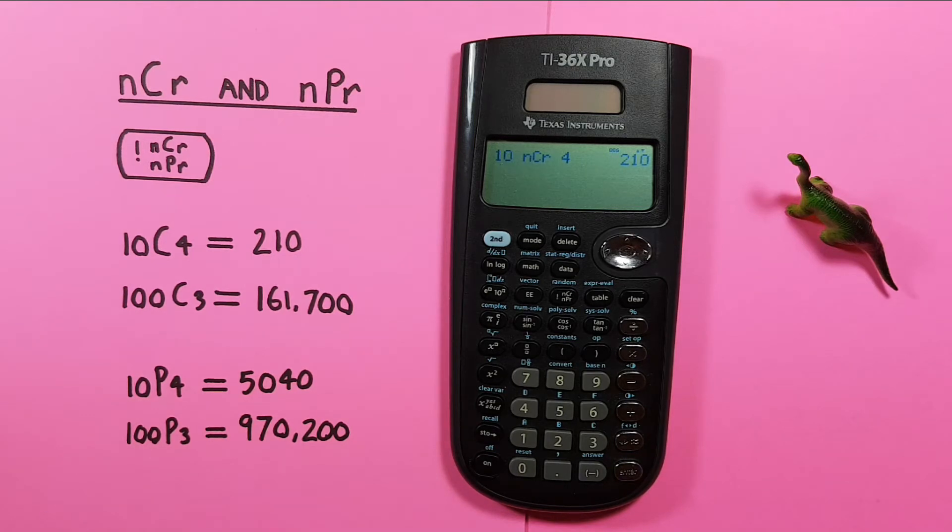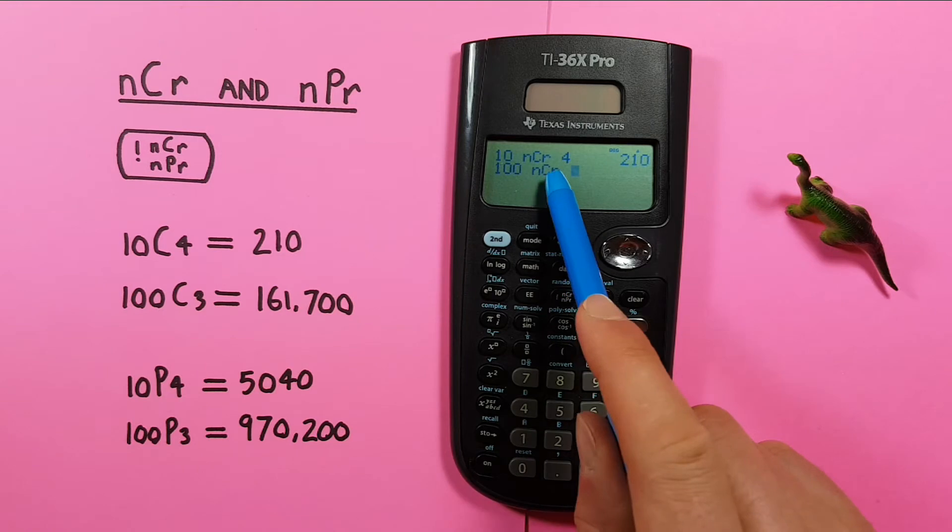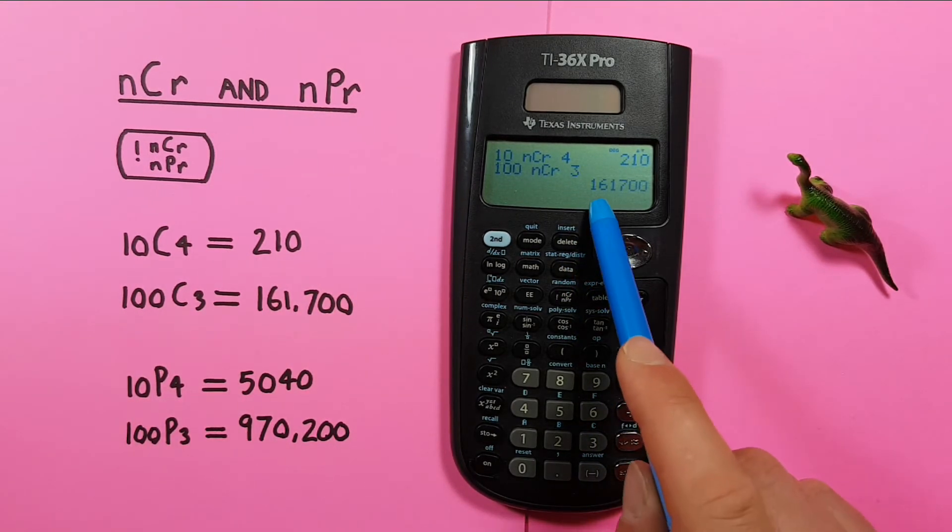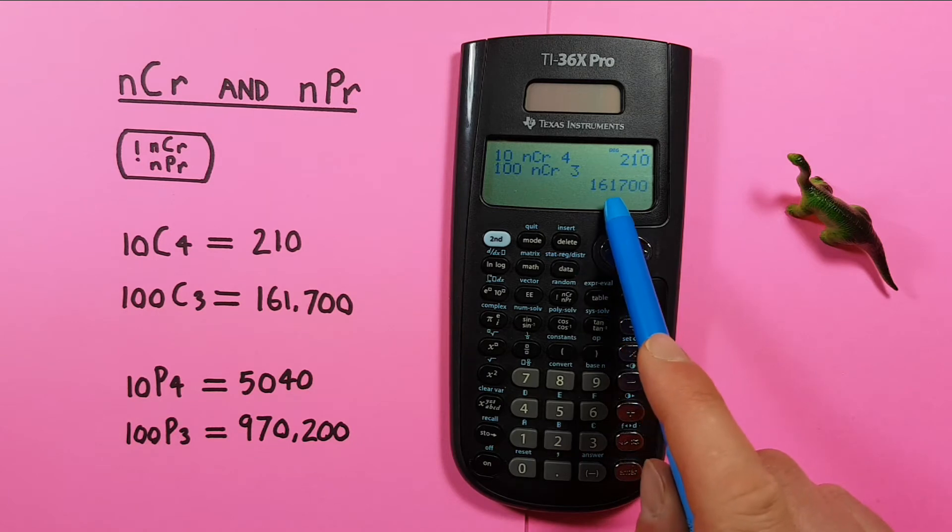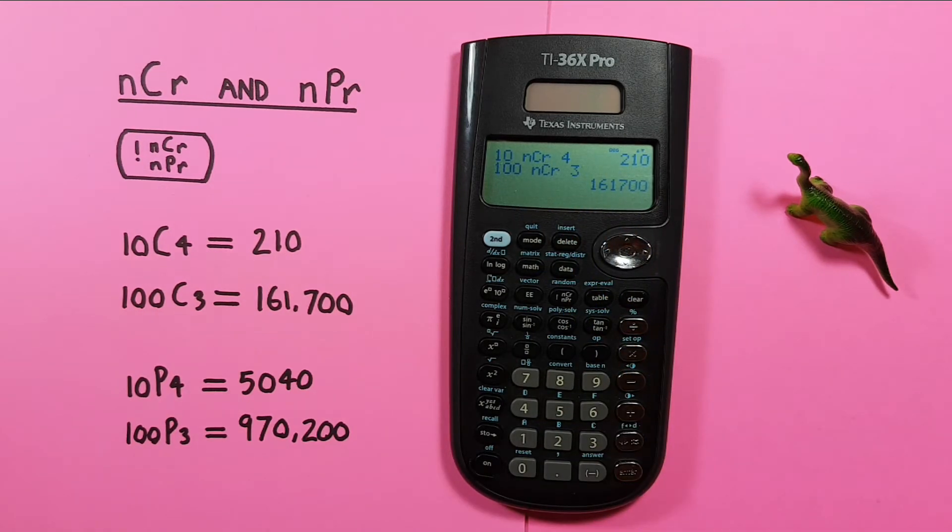Another example, if we want to choose 3 from a set of 100, we start by entering the 100, cycle to the NCR, and then hit the 3 and enter. And we see there are 161,700 possible combinations when choosing 3 from a set of 100.